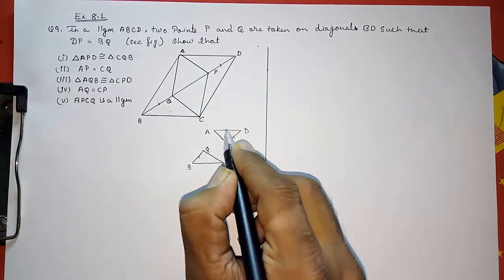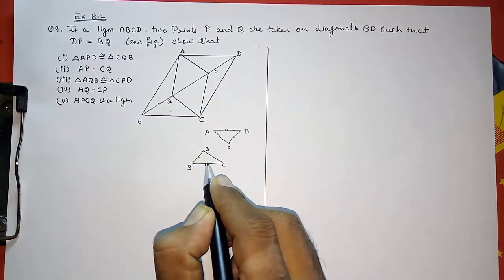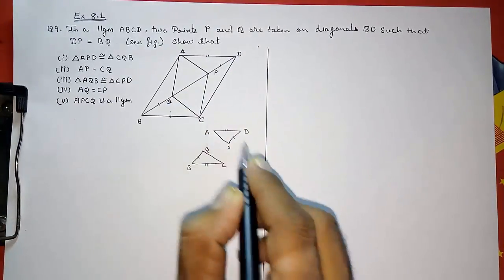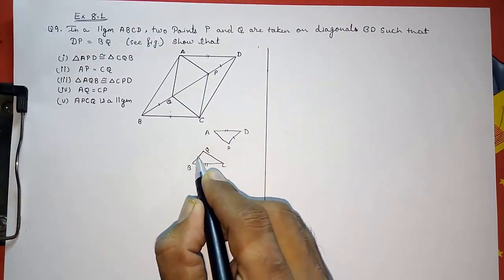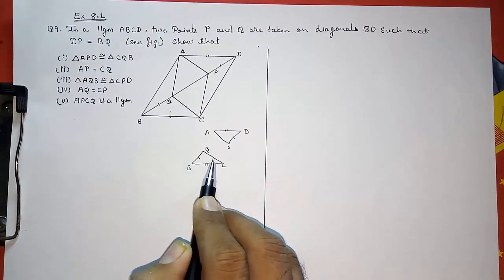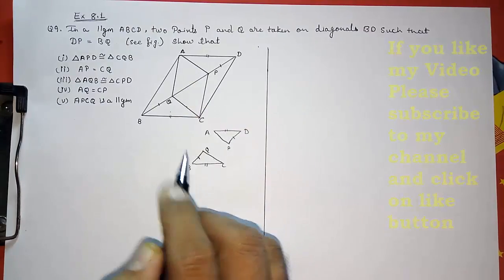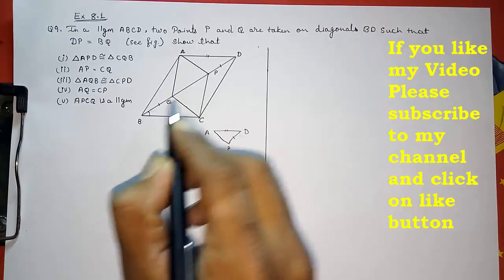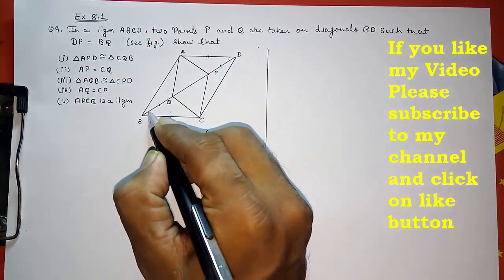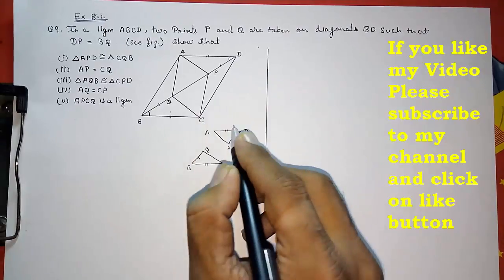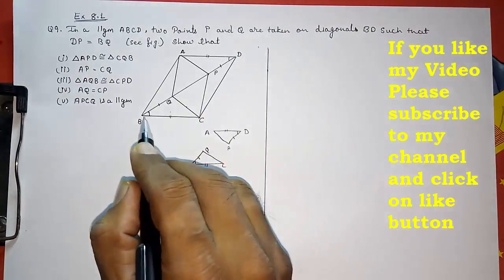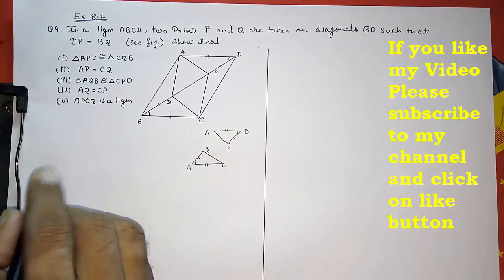We know opposite sides of a parallelogram are equal, so AD equals BC. For the angles, since it is a parallelogram, opposite sides are parallel, so we can say these two angles are equal by alternate interior angles.